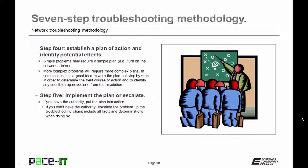Once you've confirmed your theory of probable cause, it's on to step four. Establish a plan of action and identify potential effects. Simple problems may require a simple plan. More complex problems will require more complex plans. In some cases, it is a good idea to write the plan out step by step in order to determine the best course of action and to identify any possible repercussions that the resolution to the problem may introduce into the network.